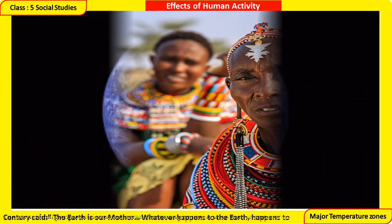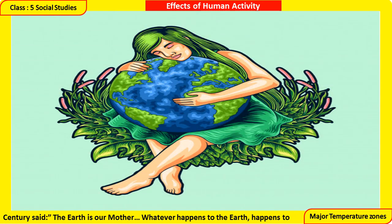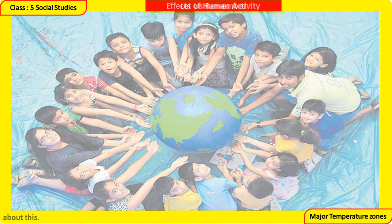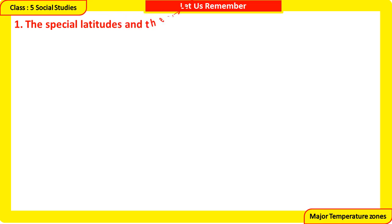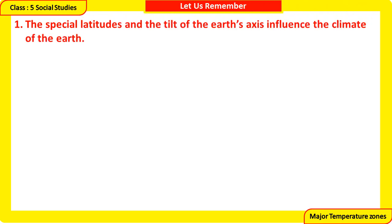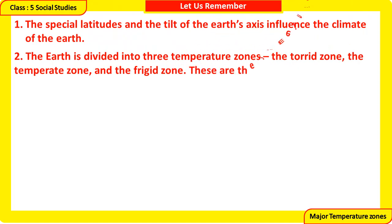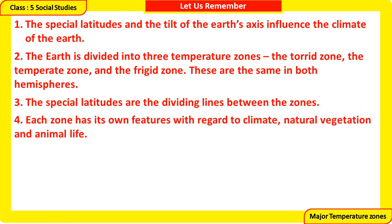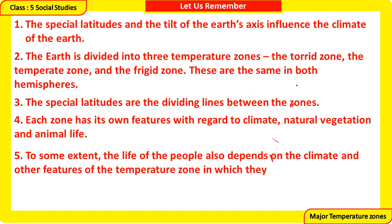A wise man in the 19th century said: the earth is our mother. Whatever happens to the earth happens to the children of the earth. All things are connected, and all human beings need to think about this. Let us remember: the special latitudes and the tilt of the earth's axis influence the climate of the earth. The earth is divided into three temperature zones — the Torrid Zone, the Temperate Zone, and the Frigid Zone — the same in both hemispheres. The special latitudes are the dividing lines between the zones. Each zone has its own features with regard to climate, natural vegetation, and animal life. To some extent, the lives of the people also depend on the climate and features of the temperature zone in which they live. In many places, people are interfering with the natural world.